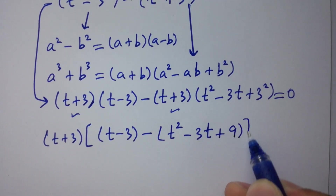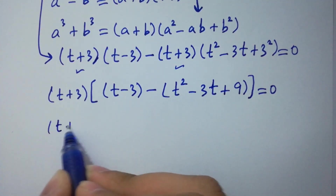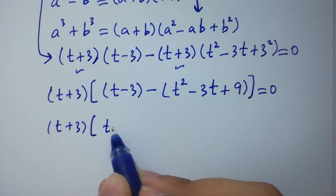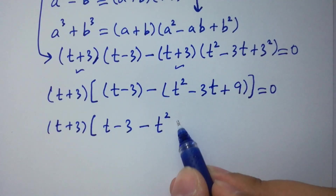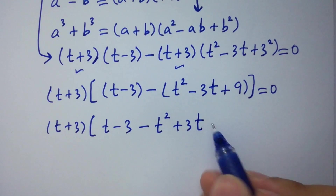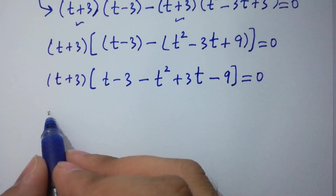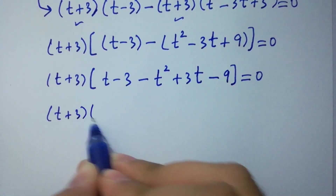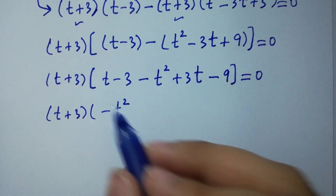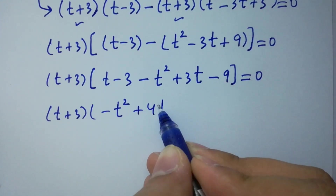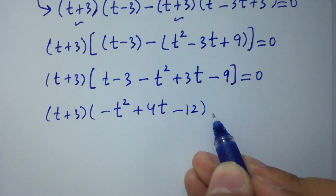Equal to 0. Expanding and collecting terms: t plus 3 combined with minus t-squared plus 3t minus 2t plus 3t. We get 4t. Minus 3 minus 9 gives minus 12, equal to 0.